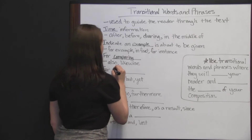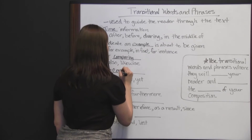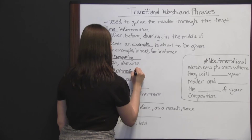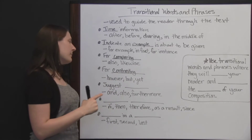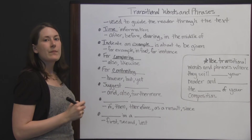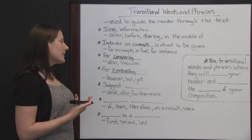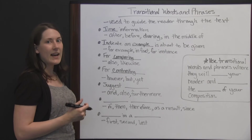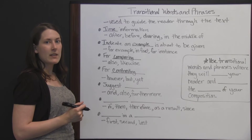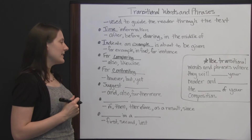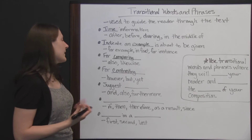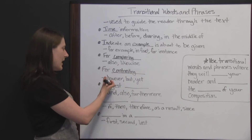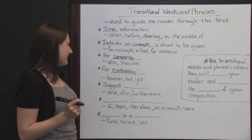You can also use transitions for contrasting — saying how two things are different. Words like 'however,' 'but,' and 'yet' signal contrast. For example: 'You would like a dog for a pet because they are so companionable, but a cat is not going to be as affectionate — they won't make as good of a companion as a dog.' You can contrast two things using however, but, or yet.